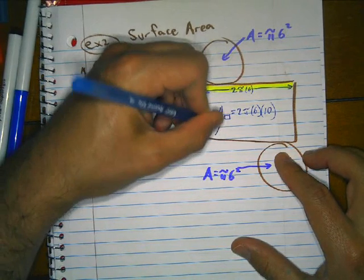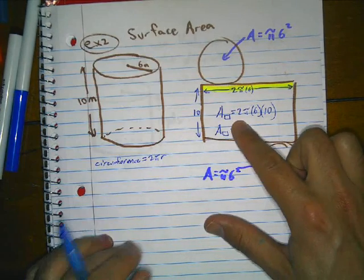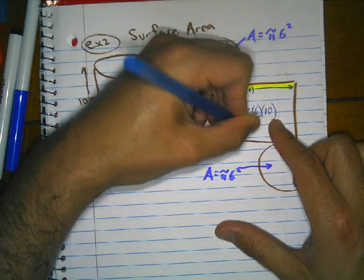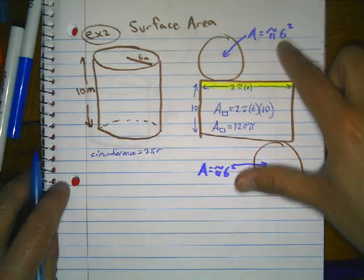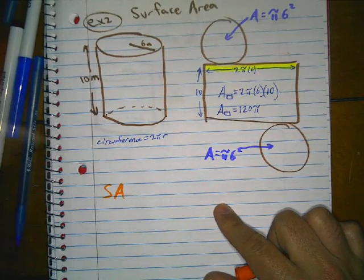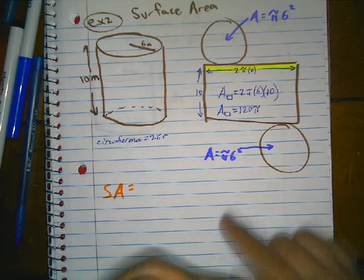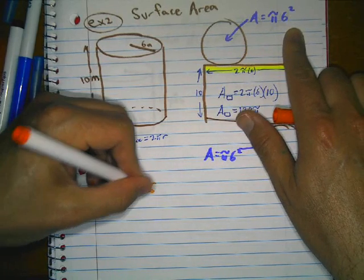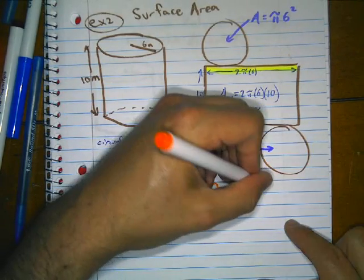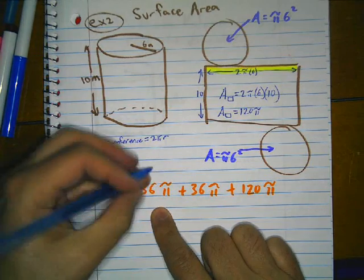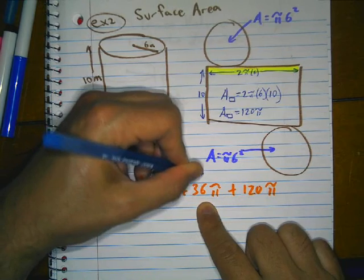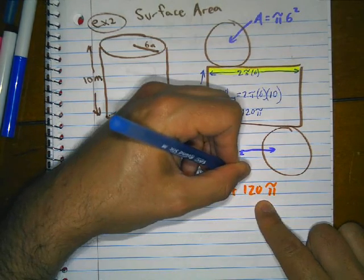The area of the rectangle is 2 times pi times 6 times 10. Simplifying: 2 times 6 is 12, and 12 times 10 is 120. So the rectangle area is 120 pi. We'll use these pieces to solve for the surface area.